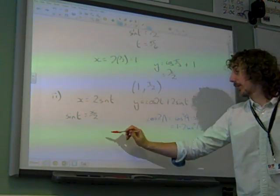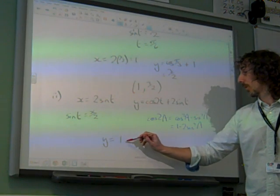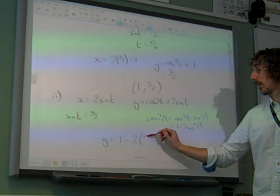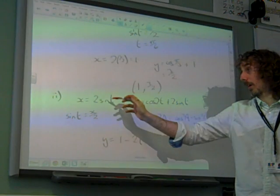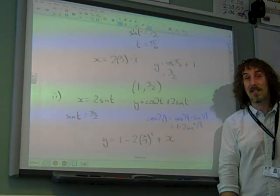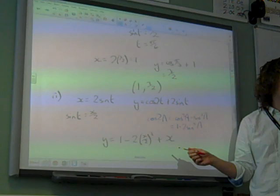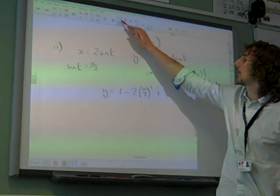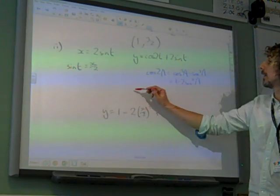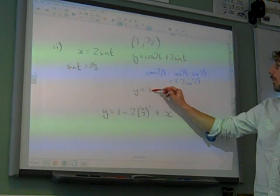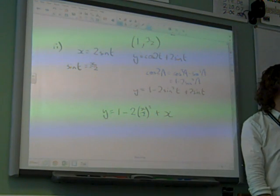Sine(t) is x over 2. So if sine(t) is x over 2, y equals 1 minus 2sine squared x, 1 minus 2(x/2) squared plus 2sine(t), plus 2sine(t) which is x. Let me write another line first, because I did kind of miss out a little bit there. So what we've said is that this y equation up here, y equals cos(2t) is 1 minus 2sine squared t, plus 2sine(t). We've written it like that first. Happy with that?